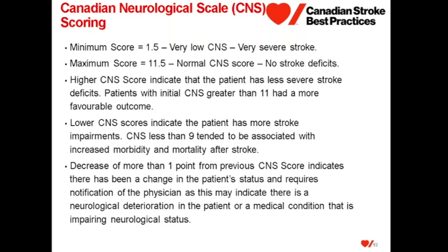The maximum score on the Canadian Neurological Scale is 11.5, representing a normal score with no stroke deficit. A higher score indicates a less severe stroke. Patients with an initial score greater than 11 had a more favorable outcome, while those with a score less than 9 tended to be associated with increased morbidity and mortality. Dr. Cote and Dr. Hoshinsky found that a decrease of more than one point from the previous score indicated a potential change in patient status requiring physician notification, possibly indicating neurological deterioration or a medical condition impairing neurological status.